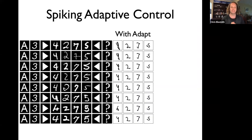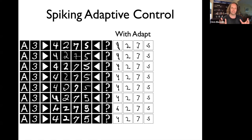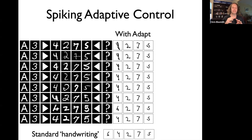We can look at this in a cognitive task context similar to experiments done with people and monkeys, where you give them a joystick, tell them to move it to a target, and then apply a weird force field that makes it hard to reach because it constantly perturbs motion. After several hundred trials, people and animals can move just as they did before the force field was applied. We're doing the same with SPAWN — getting it to perform a serial working memory task showing four digits while a force field is applied, and you can see that over time its writing gets more and more legible, ending up in a pretty similar place to its standard handwriting.